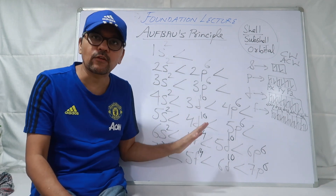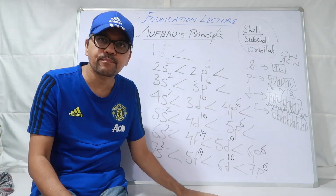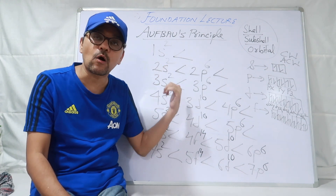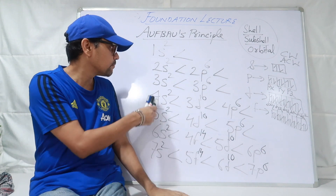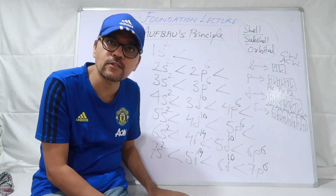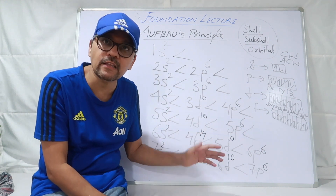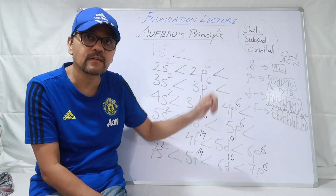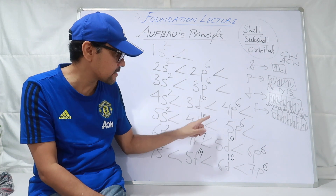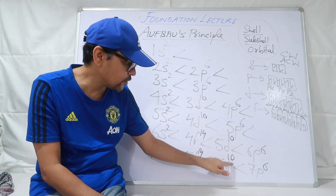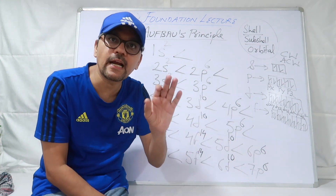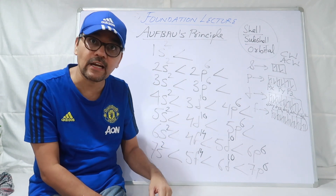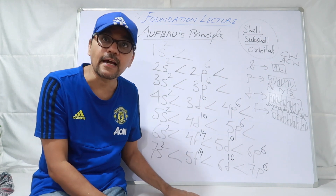Isse aapko yeh bhi malum padta hai: S block mein kitne elements hote hain? Count karke dekho — to 14 honge. S block mein 14 elements hote hain periodic table mein. P block mein kitne honge? 36 elements — 6 into 6, kyunki 1P6 hote hain. D block mein count karo: 10, 20, 30, 40 — 40 elements hote hain D block mein. Aur F block mein: lanthanoid series mein 14 aur actinoid series mein 14 — 14 aur 14 kitne ho gaye? 28.